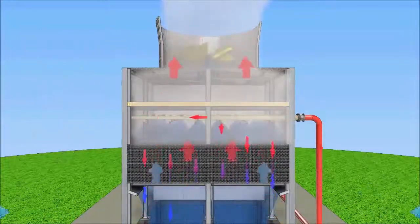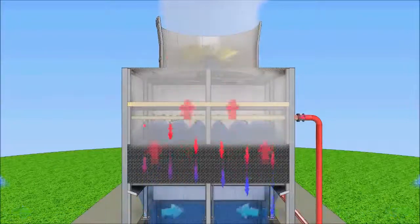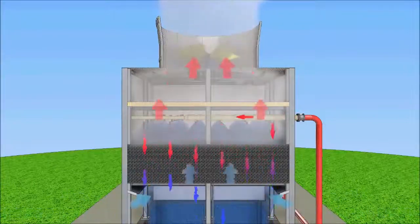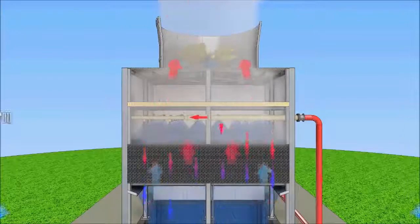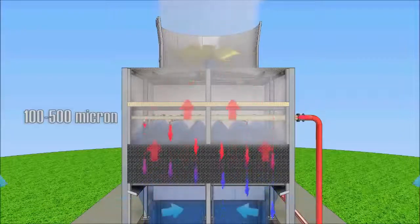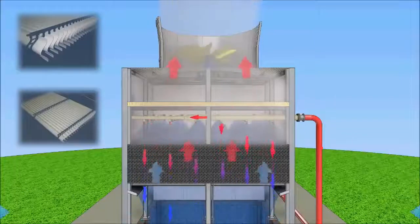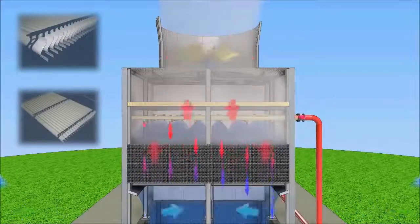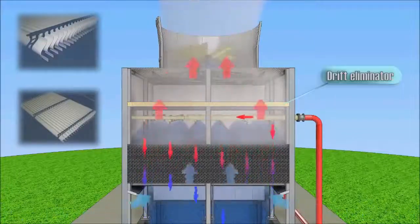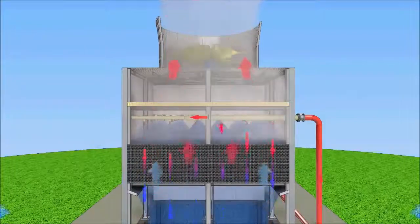When operating a cooling tower, air is saturated with water vapor and contains water droplets with sizes of 100-500 microns. To prevent entrainment of water droplets, a drift eliminator is installed above the water distribution system.